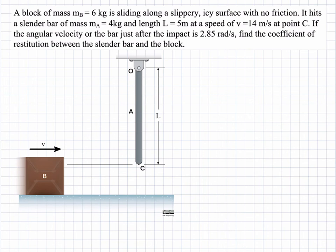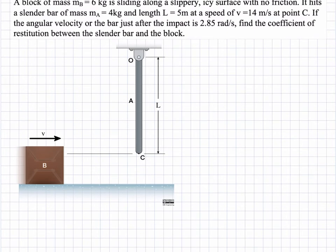In this problem we have a block B sliding along a slippery icy surface with no friction and it hits a slender rod of mass 4 kilograms and length 5 meters with an initial speed of 14 meters per second. If the angular velocity of the bar just after the impact is 2.85 radians per second, what is the coefficient of restitution between the slender bar and the block?